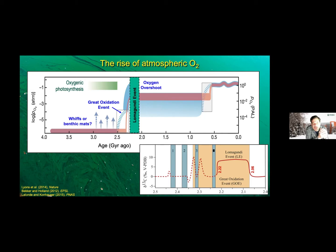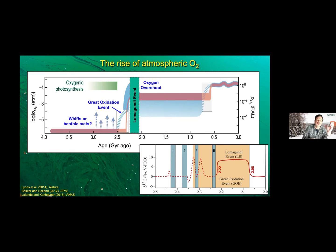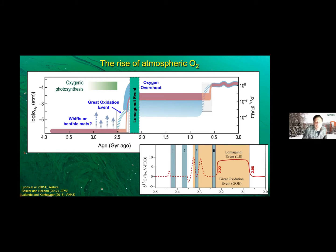The standard explanation for getting a positive fractionation in limestone is that you have to bury a lot of organic carbon. Phytoplankton take up carbon-12, leaving carbon-13 in seawater, which forms the limestone. To get such a large positive fractionation you need a significant amount of organic carbon burial. How that links to the oxygen overshoot: one way of increasing atmospheric oxygen is by burying more organic carbon. If cyanobacteria produce O2 but you bury their organic carbon so aerobic respirators can't get to it, you end up with an excess of O2 accumulating in the atmosphere. That's what the Lomagundi Event represents.